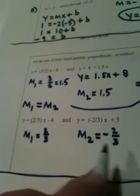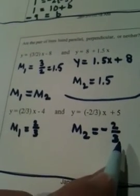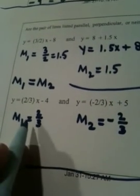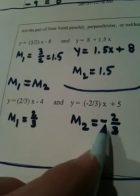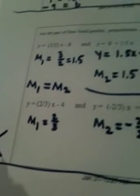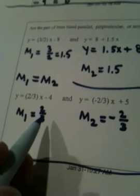Now, a lot of times this problem tricks people because they go, oh, yeah, these are opposite reciprocals. No, they're not. They're opposites, right? 2 thirds and negative 2 thirds are opposite. But for two lines to be perpendicular, which means they have to meet at right angles, not only are they opposites, but they have to be opposite reciprocals.